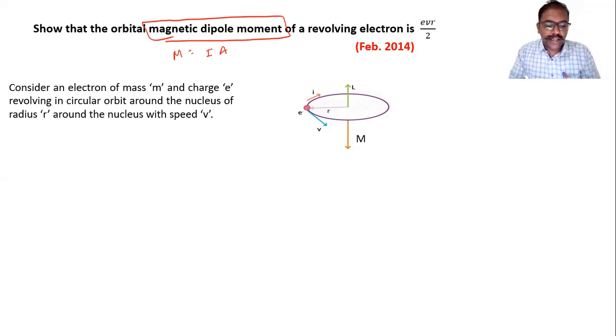So here, when the electron is revolving, the circulating current we can write by charge by time. And this is area. So we can find out time for revolution. So it's a period. So first we find out period.